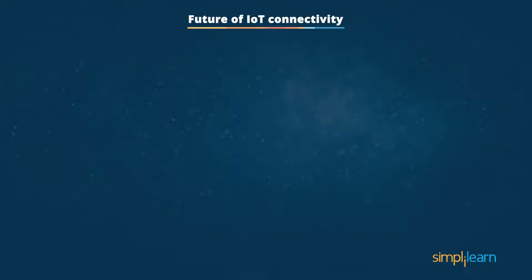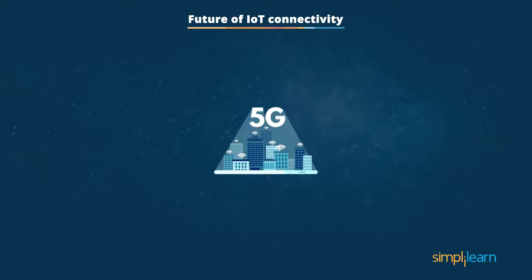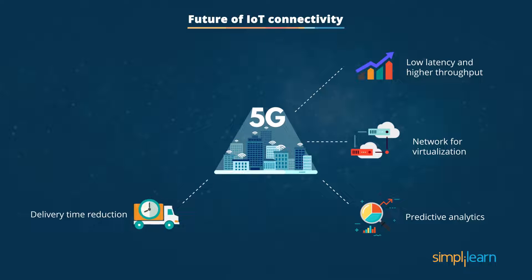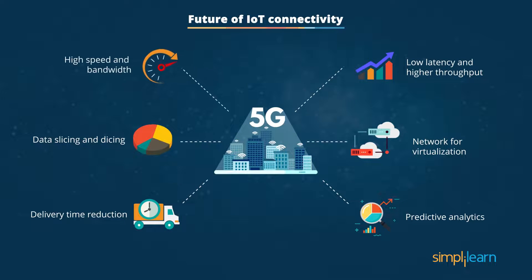The future of IoT connectivity lies in new technologies like 5G. With low latency and higher throughput, 5G will increase the penetration of IoT. 5G cellular technology is supported by network virtualization. Even for common use cases, such as a vendor, real-time predictive analytics can be available, reducing overall delivery time. 5G and IoT are embedded technologies — both can be sliced and diced for predictive analytics and real-time business decisions. 5G will help devices connect through a network with high-speed bandwidth.